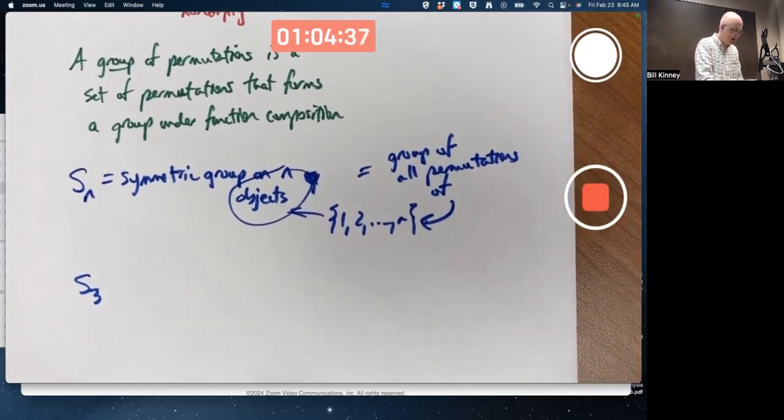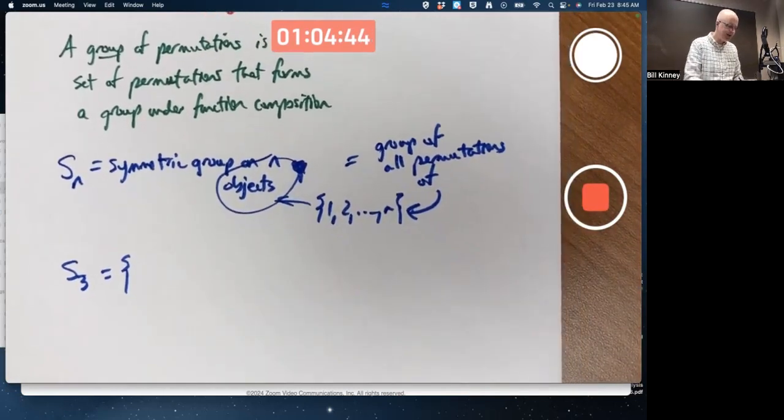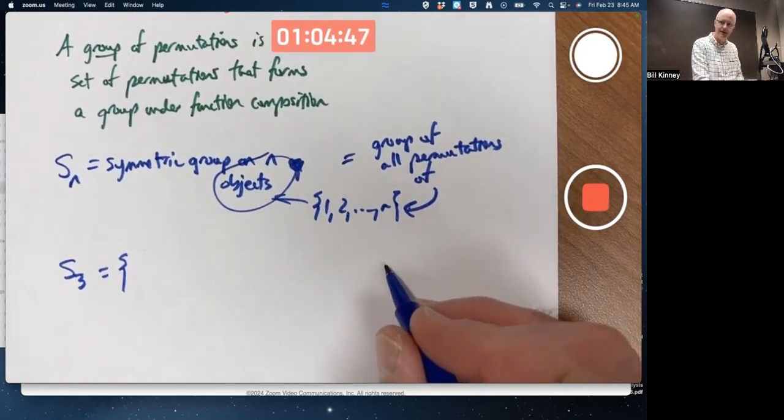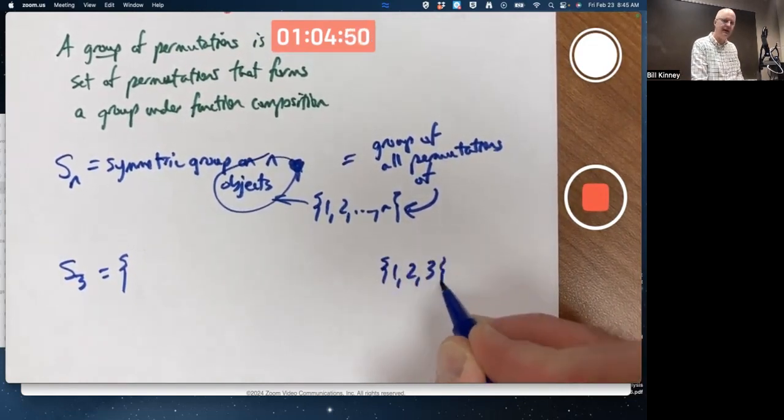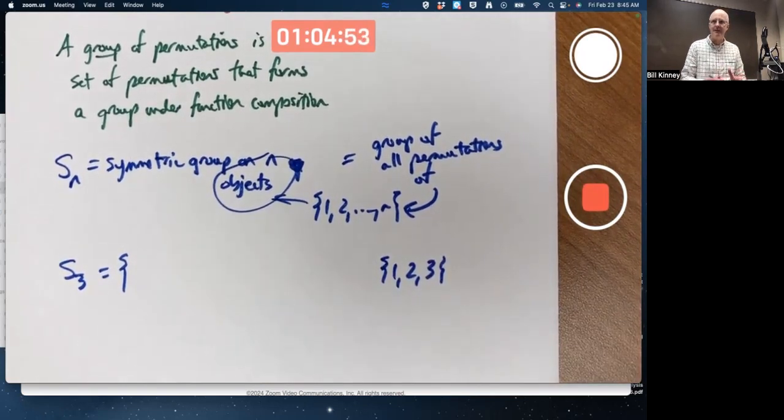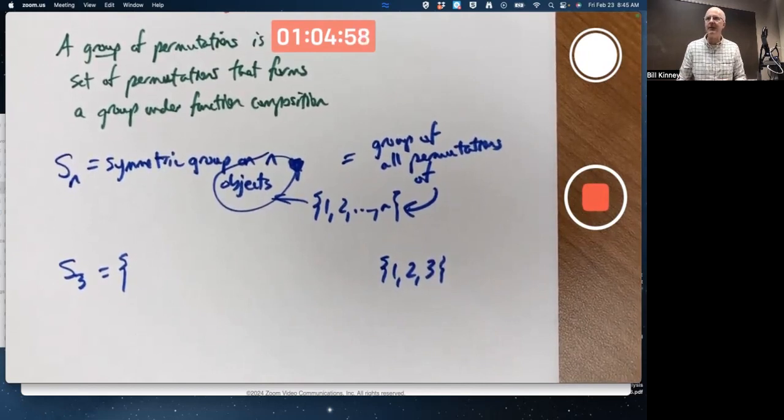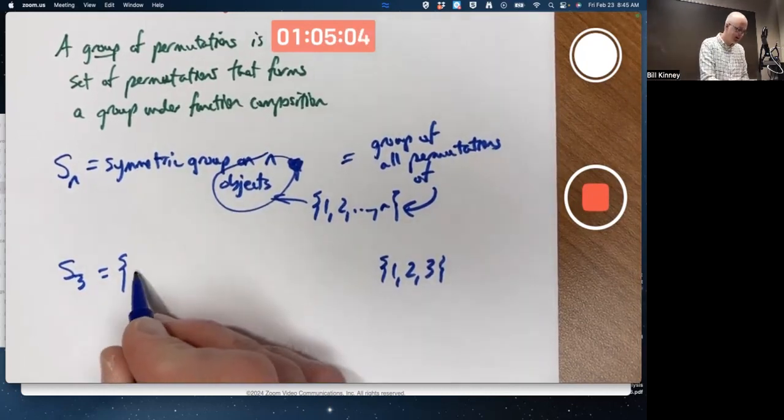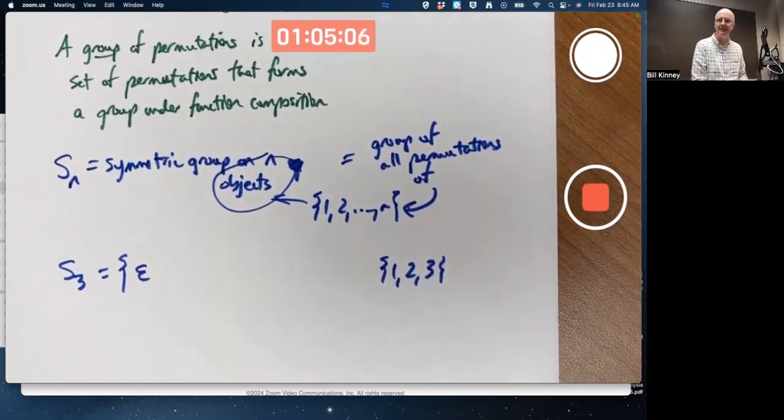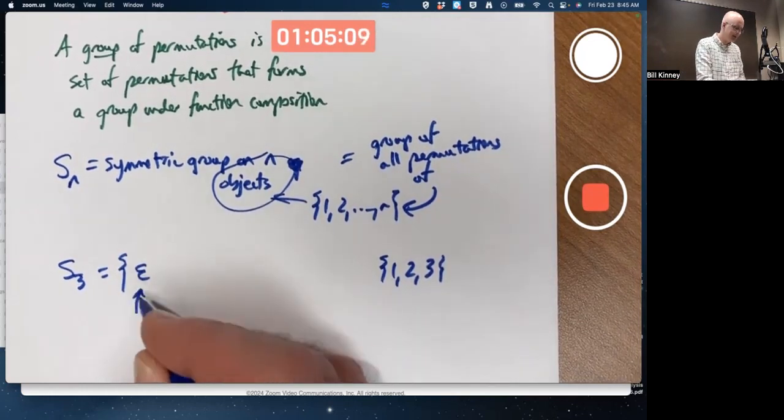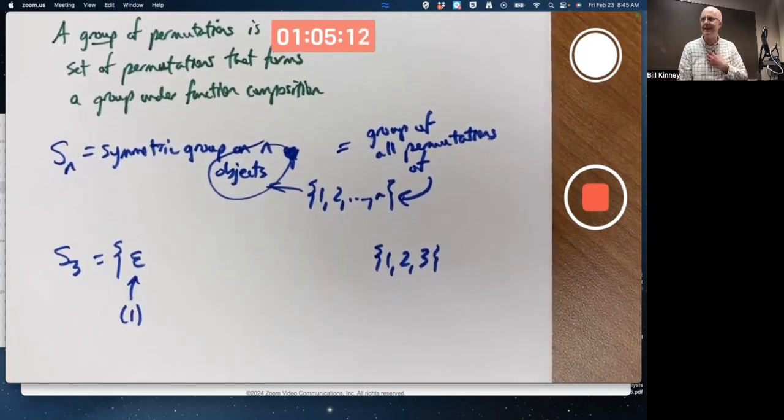For example, S_3, the group of all permutations on three objects. Your three objects being 1, 2, and 3. The elements of S_3 are going to be functions. There's the function that maps everything to itself, the identity function. In this context, typically called epsilon. In cycle notation, that could be written as just (1) by itself, indicating you map 1 to 1. 2 and 3 don't show up, so it's assumed that 2 gets mapped to 2 and 3 gets mapped to 3.